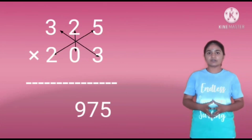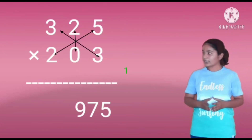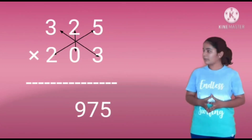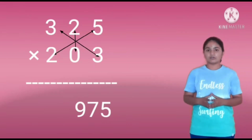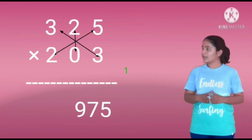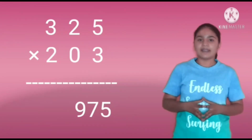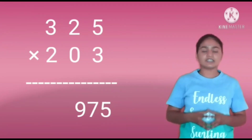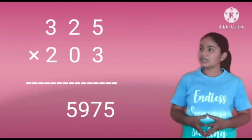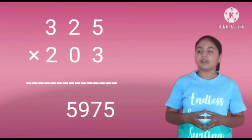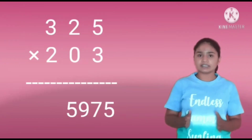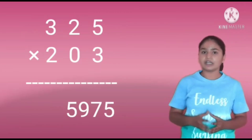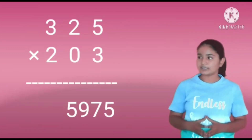Next, we have to multiply all digits. That is 3 into 3, 5 into 2, and 2 into 0. It will be 9, 10, and 0. Add these numbers, we will get 19. Write the 9 in the 100s place and keep 1 as carry. Next, we have to multiply the last digits. That is 3 into 0 and 2 into 2. It will be 0 and 4. Add these numbers, we will get 4. Add the carry to it, it will be 5. Write the 5 in the 1000s place.